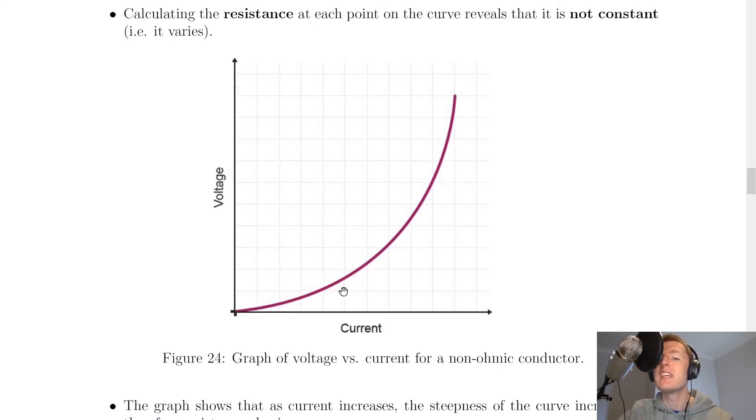And in actual fact, if we were to take a tangent at each point on this curve, so a straight line that goes off there, a straight line that goes off there, a straight line that goes off there, and so on, you'll notice that the steepness of our tangent actually increases, i.e. the steepness of our curve increases. And that means that resistance will actually increase for a non-ohmic conductor.